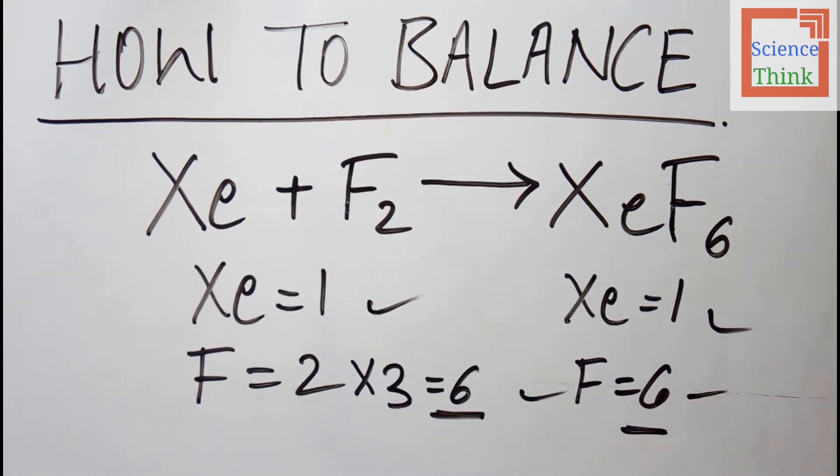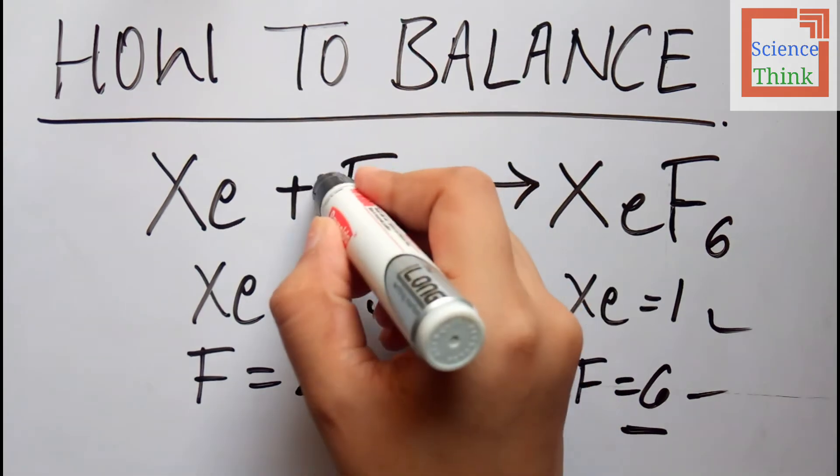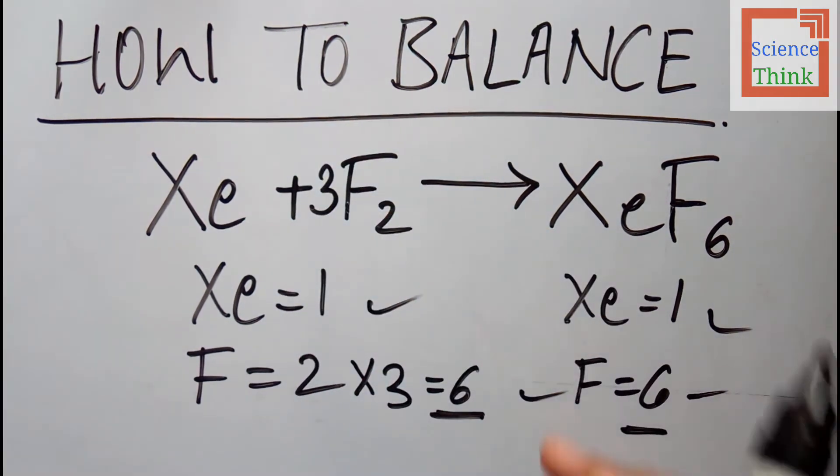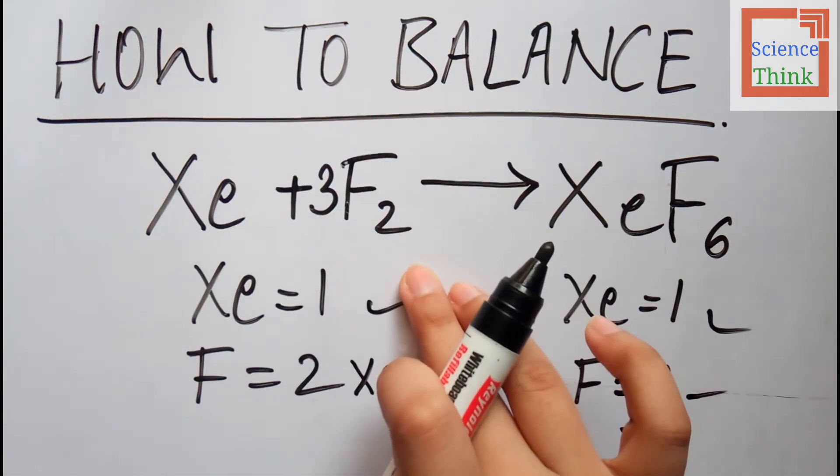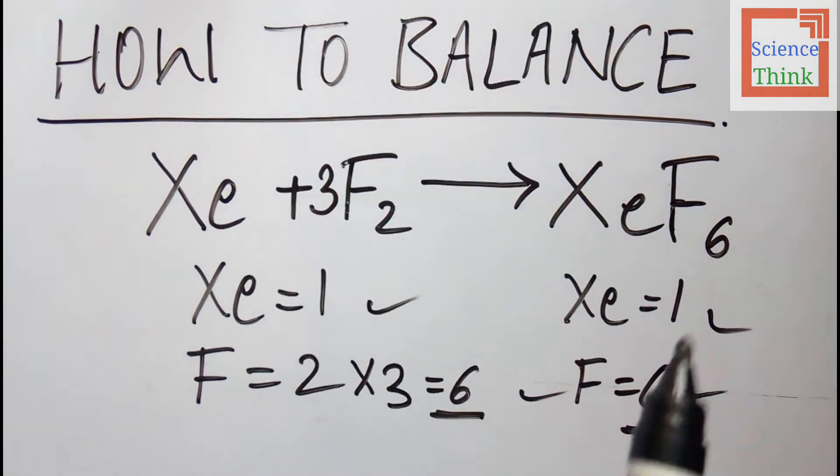Fluorine atoms are also equal. Here I have put three, so I'll put here three. You can see I've only changed the coefficients but not the subscripts, so the coefficient is 3. This is the balanced chemical equation.